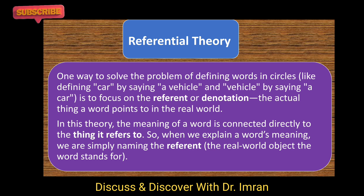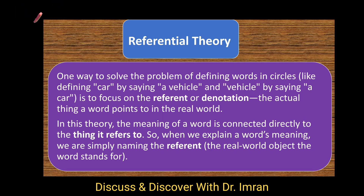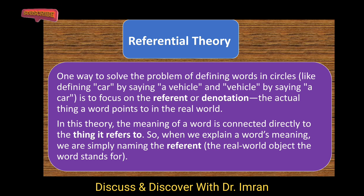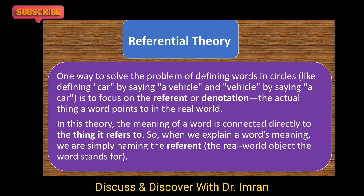For example, we have objects, things, and people in the real world — like a laptop, a mobile phone, a tree, a chair, a pen, an AC. ہمارے پاس real world میں چیزیں ہیں، انسان ہیں، objects ہیں — ان کے لئے ہم words استعمال کرتے ہیں۔ So meaning does not exist in the dictionary or in the words, but meaning exists outside — words are just a means of identification.